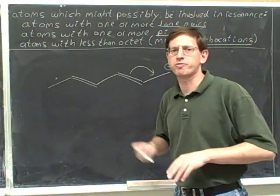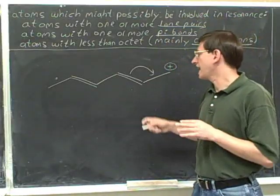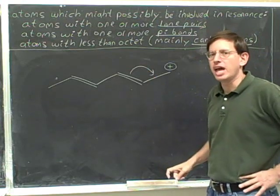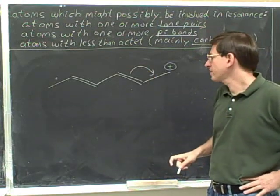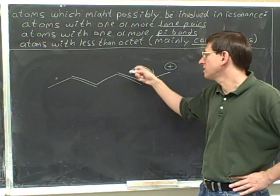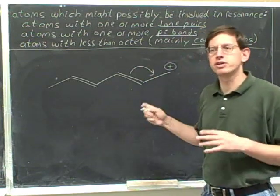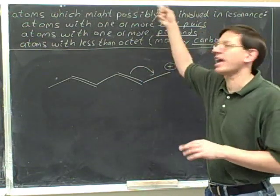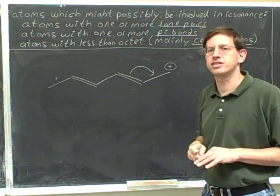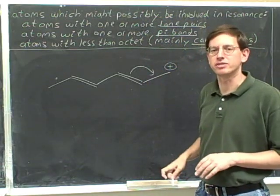Here's a new type of problem. I've drawn a picture with an electron-pushing arrow, and I'd like you to figure out: is this a legal electron-pushing arrow? Based on what we've learned so far about candidates for resonance, does this seem like a reasonable arrow?